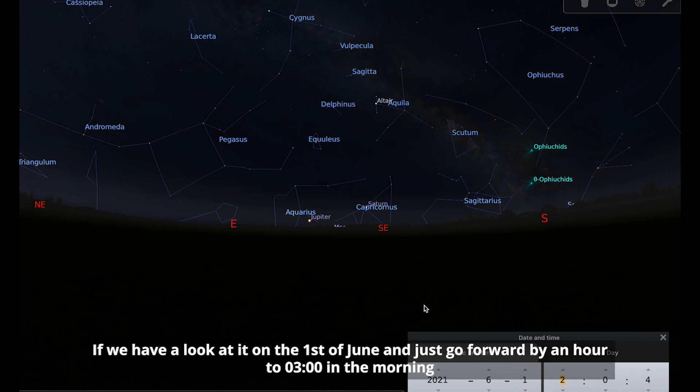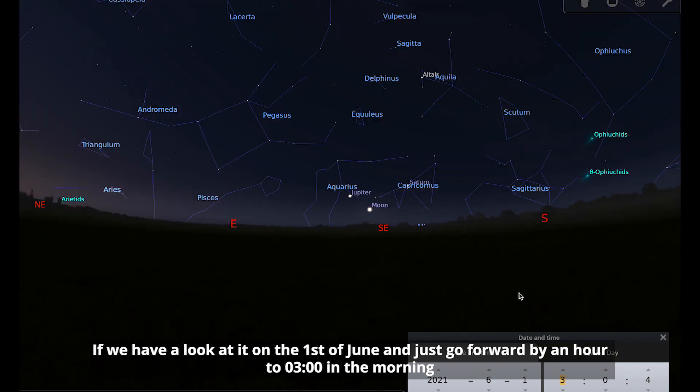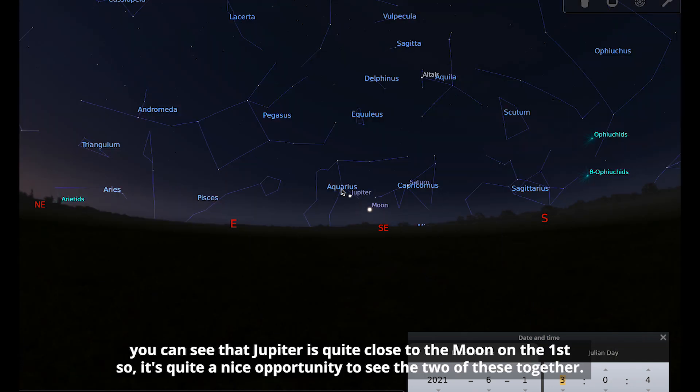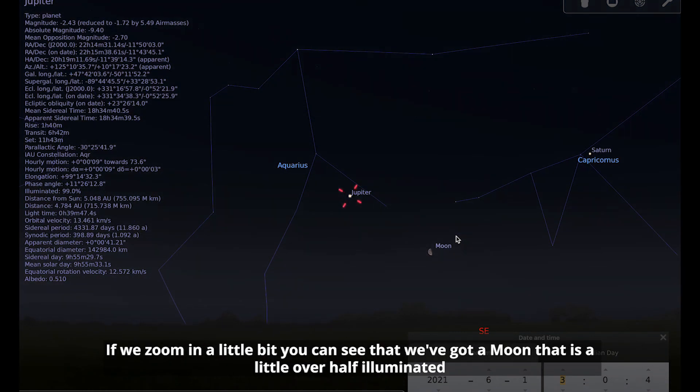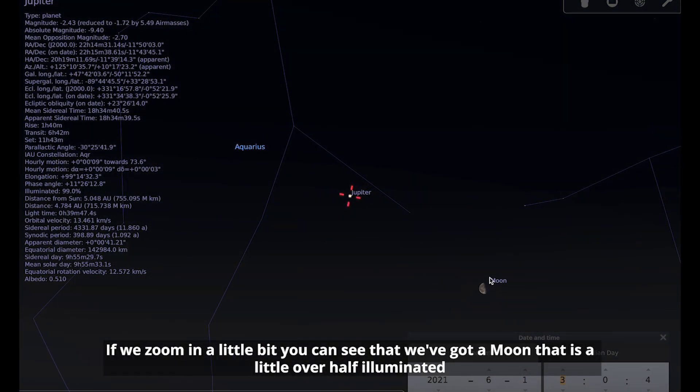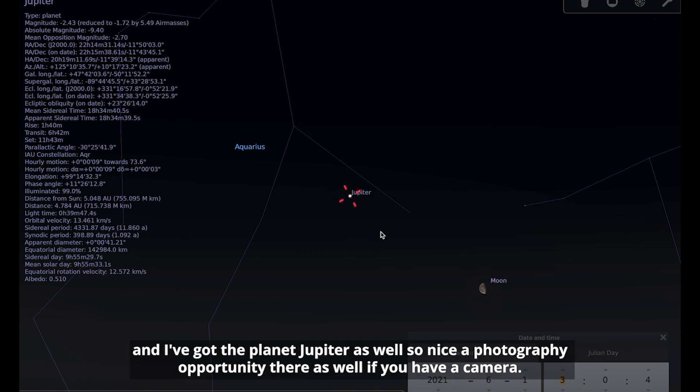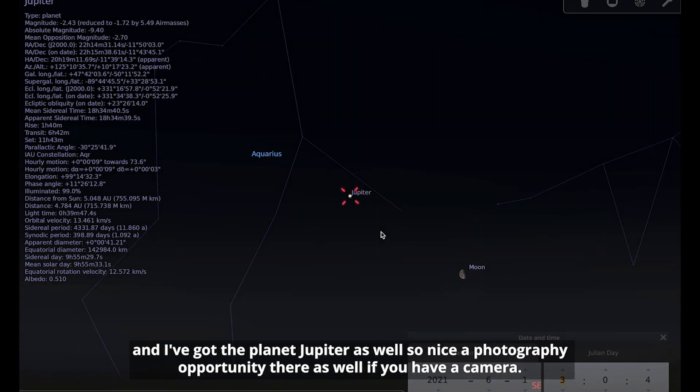If we have a look at it on the 1st of June and just go forward by an hour to 3 in the morning, you can see that Jupiter is quite close to the moon on the 1st, so it's quite a nice opportunity to see the two of these together. If we zoom in a little bit, you can see that we've got a moon that is a little over half illuminated, and we've got the planet Jupiter as well, so a nice photography opportunity.